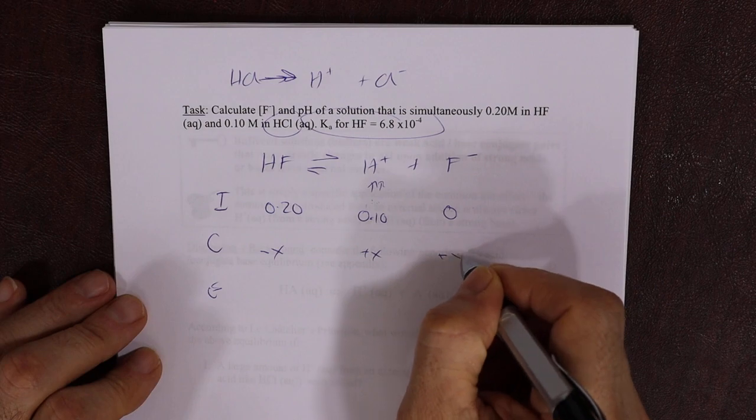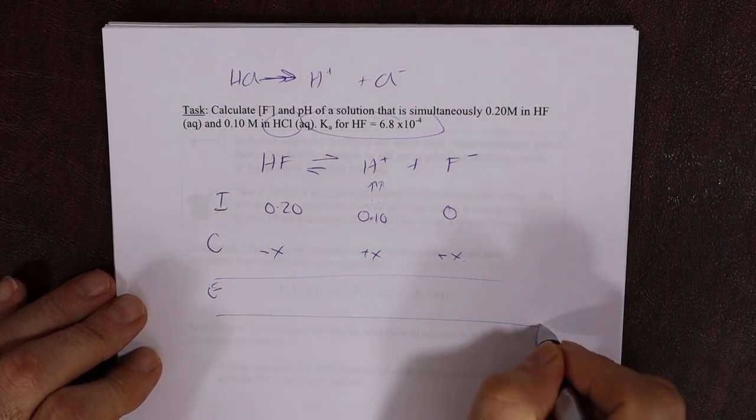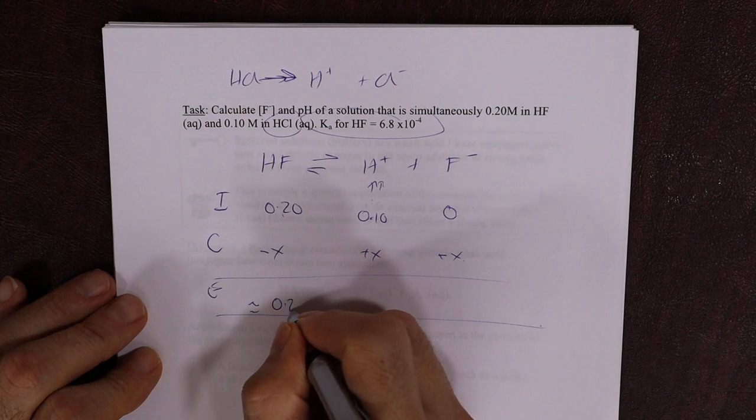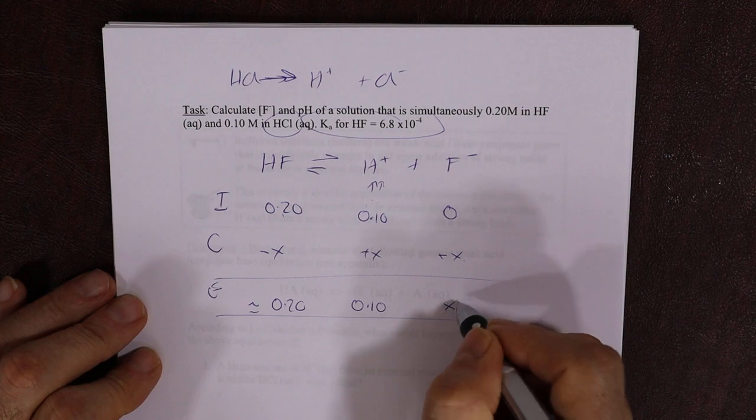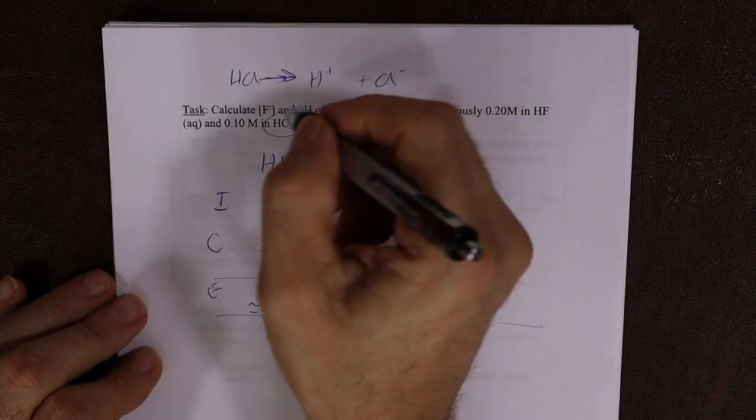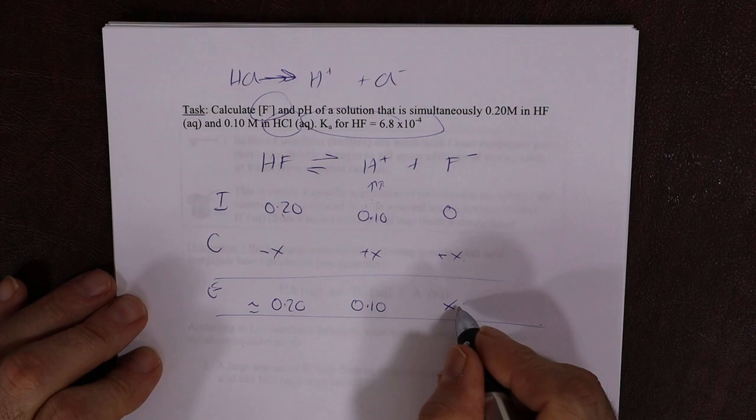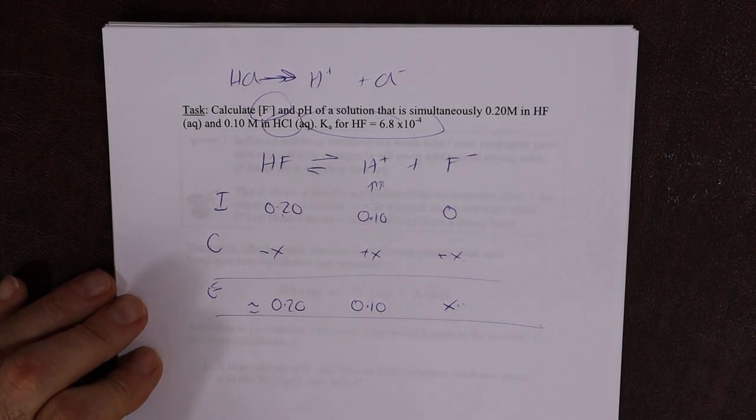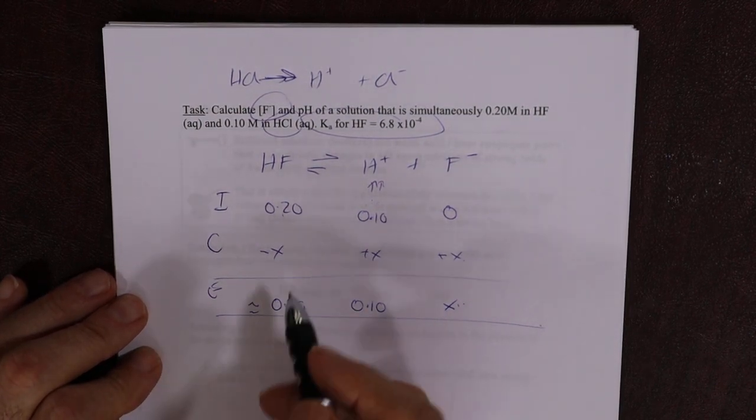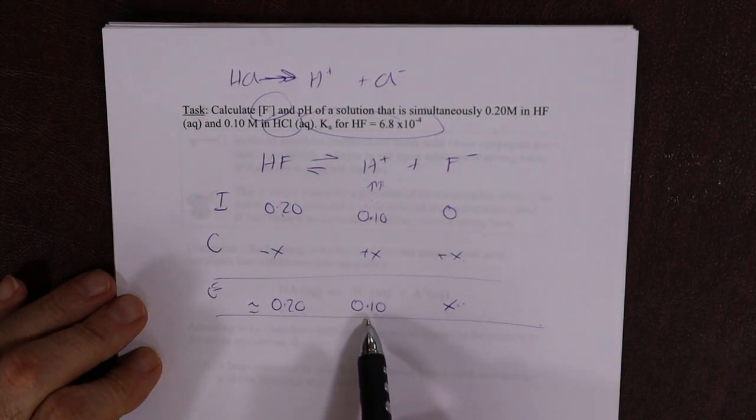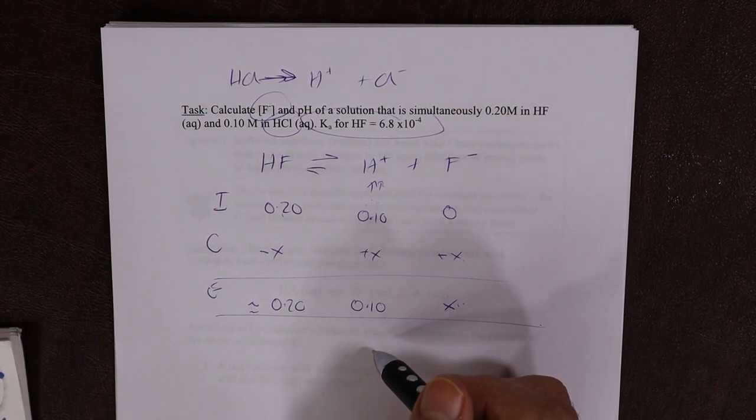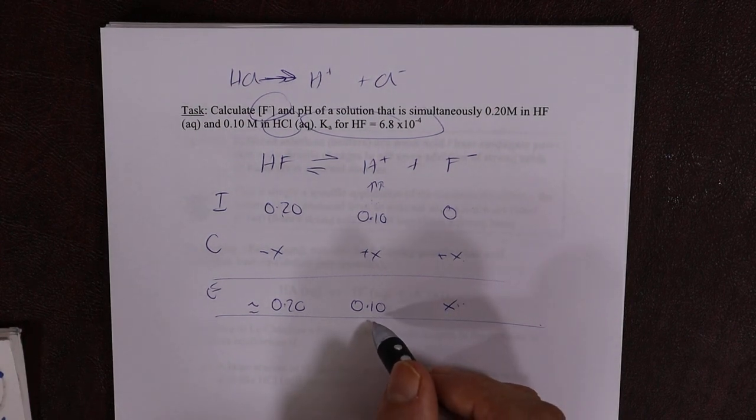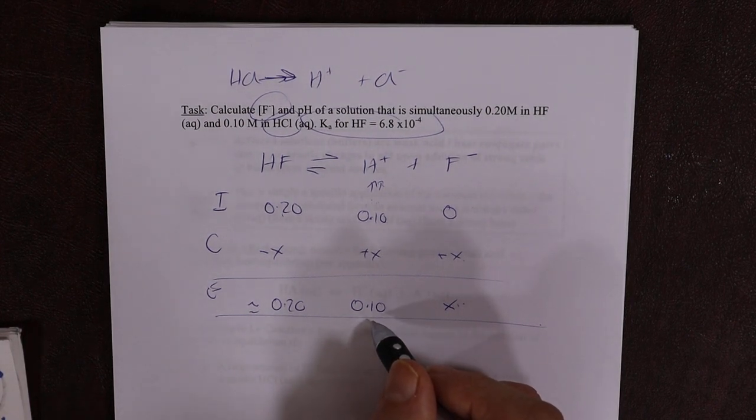Change, minus X, plus X, plus X. Equilibrium - make the weak acid approximation. The question asks what is F minus? F minus is X. So we'll solve for X in a moment. Then the pH - the pH is going to be straightforward because we know the concentration is 0.1, essentially. We'll throw in the amount of H plus that comes from the HF dissociation and see how much it affects pH. It won't affect it hardly at all.